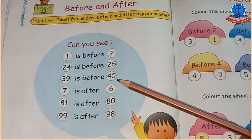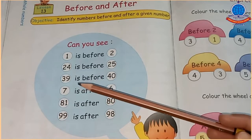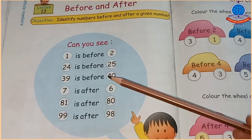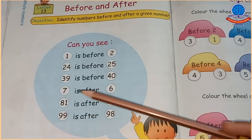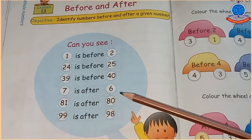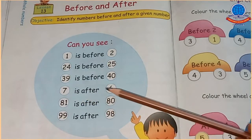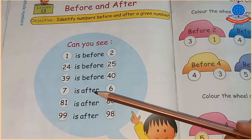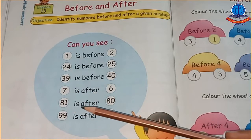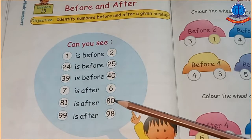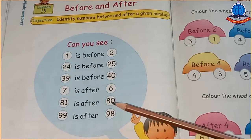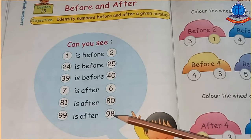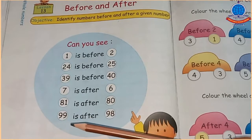39 is before 40 — इसी तरह से 39, 40 से पहले आता है। यह कुछ examples थे before की। अब हम after को देखते हैं। 7 is after 6 — 6 के बाद 7 आता है, इसलिए after का word यूज़ किया गया। 81 is after 80 — 80 के बाद 81 आता है। 99 is after 98 — इसी तरह से 98 के बाद 99 आता है।